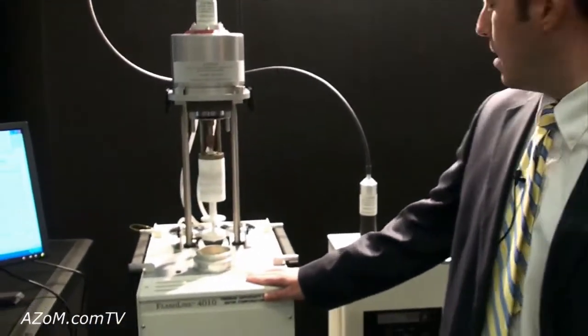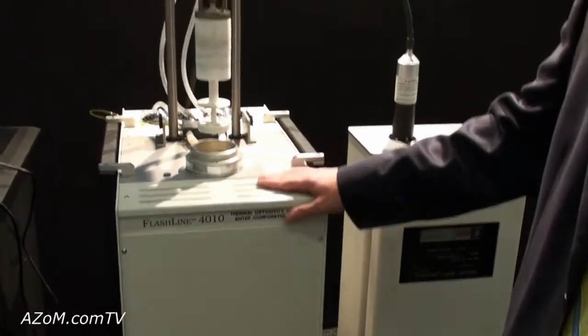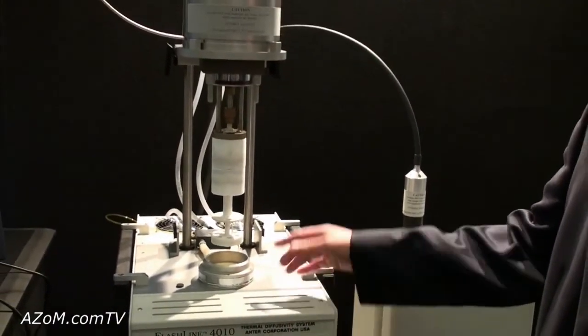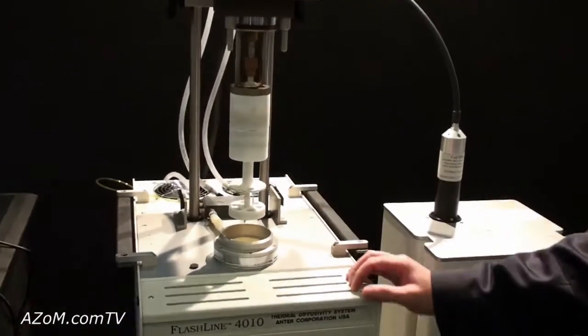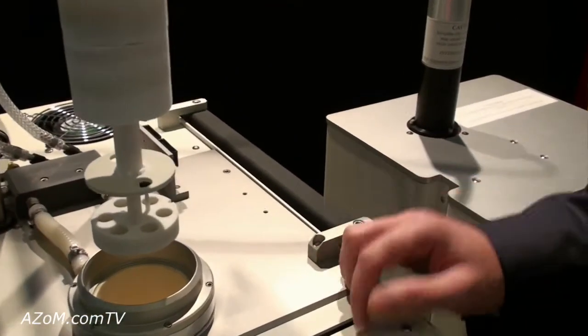This is our Flashline 4010 laser flash system. This is the laser cavity and this is the furnace. It's a room temp to 1600 furnace. This particular carousel is a six-sample carousel so you can measure five unknowns and one known reference in one.